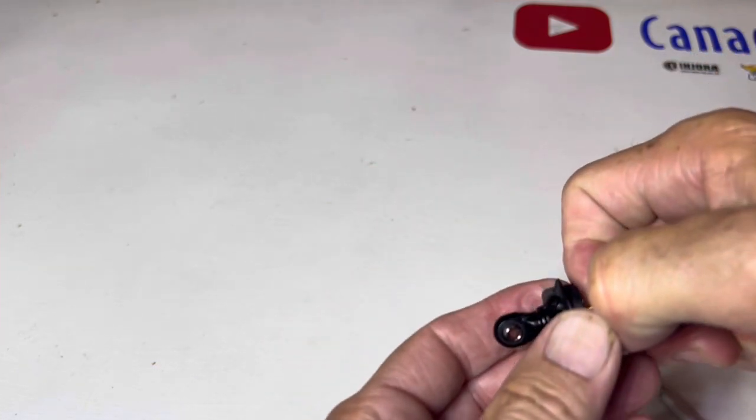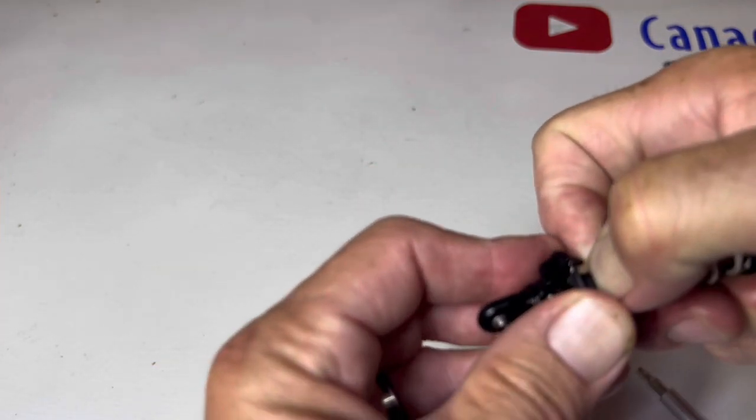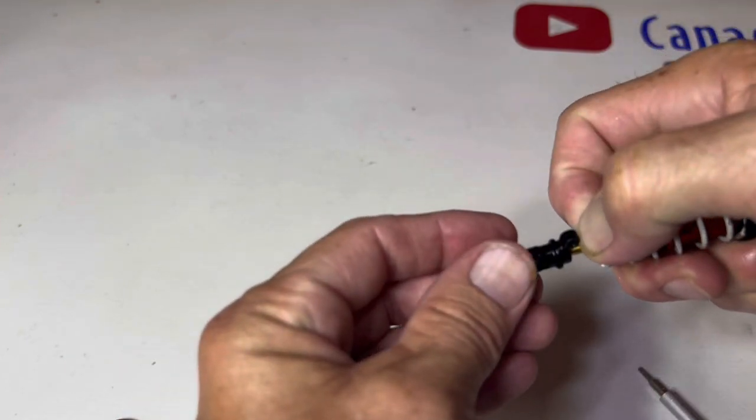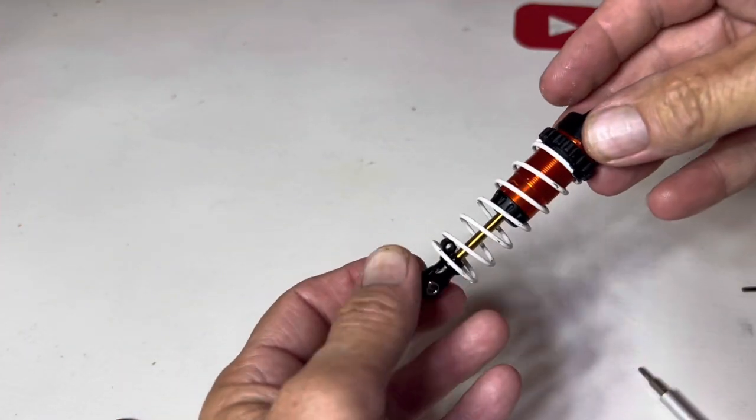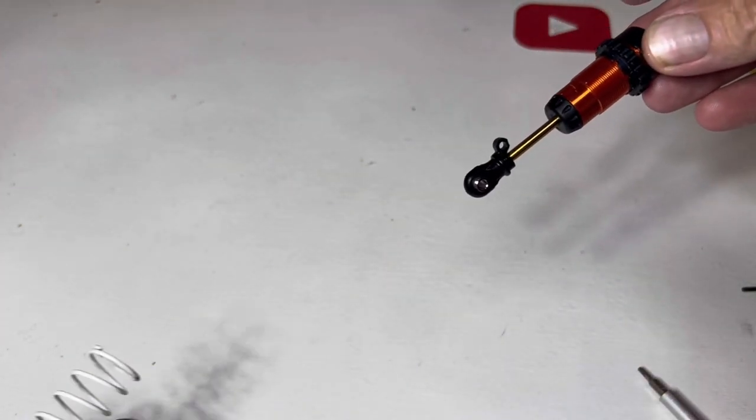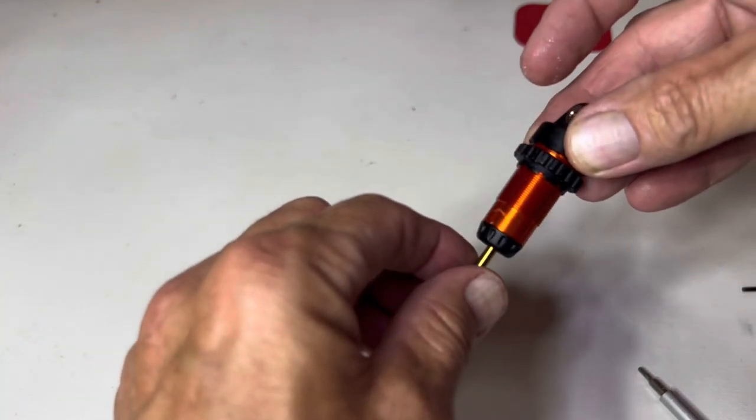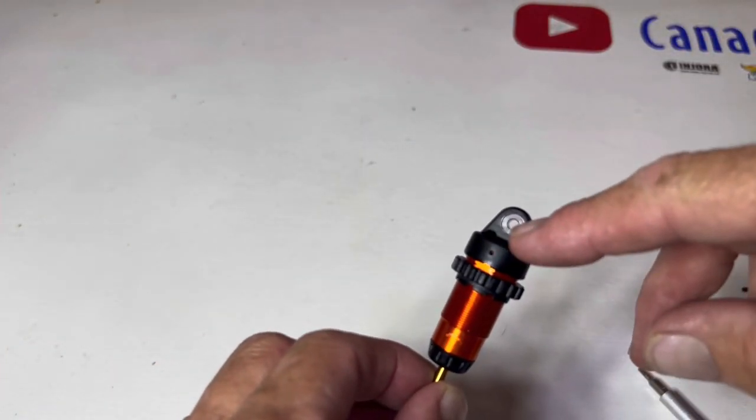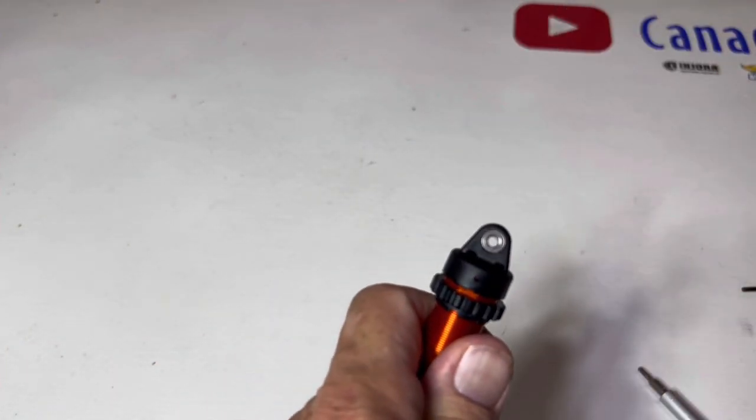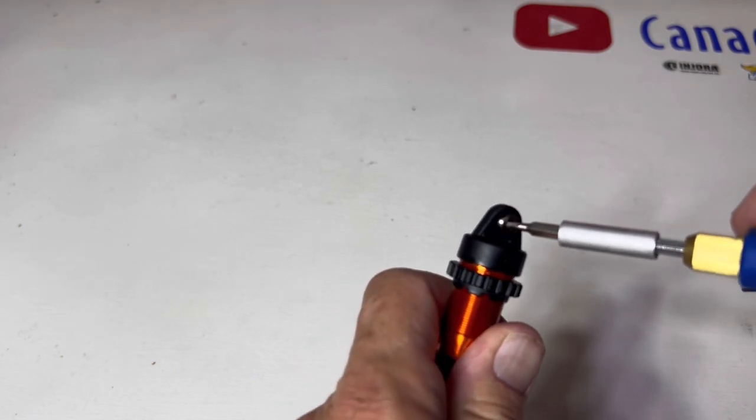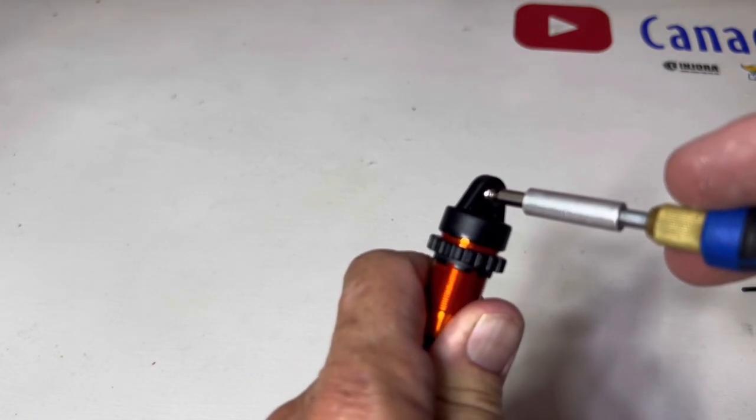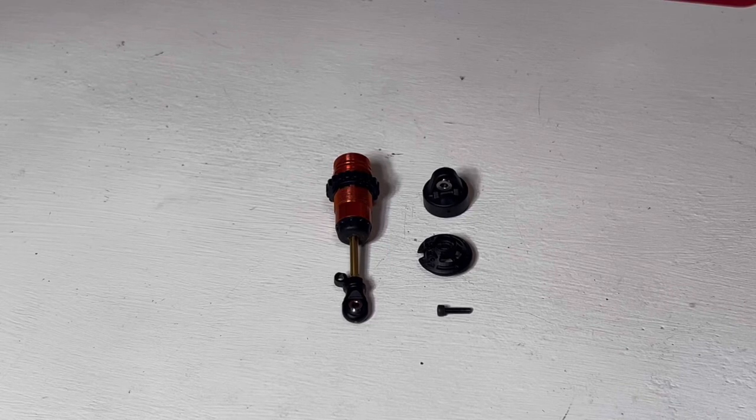Then your spring will just slide right off. Set that stuff aside. Next we're going to be able to take this cap, hold on real tight, put in your screwdriver and spin it free.